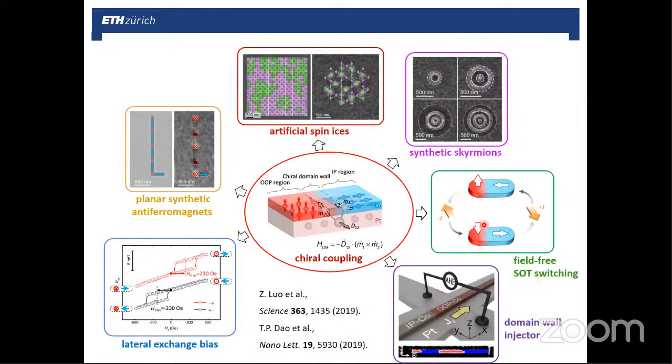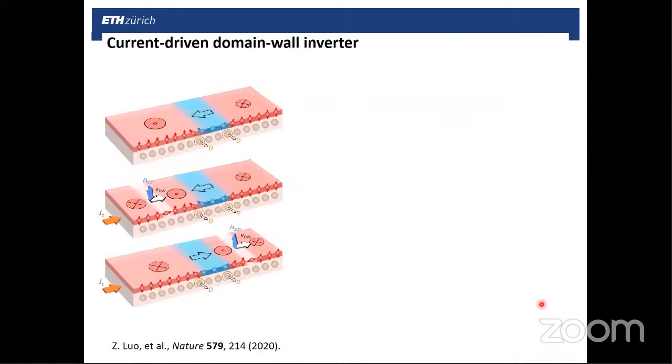So by switching, for example, the in-plane part of the magnet, also the out-of-plane one will switch, and vice versa. One can use these structures also to inject domain walls. So now, how to make a domain wall inverter starting from these structures? In this diagram, what you see is a magnetic layer. Typically, this red region is cobalt, out-of-plane magnetized. The blue region is cobalt. This is less oxidized, so it has in-plane magnetization. The bottom layer is platinum.